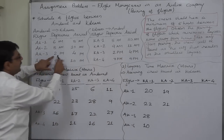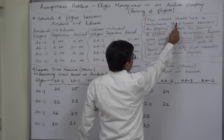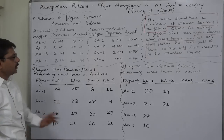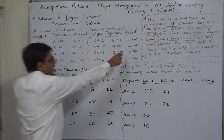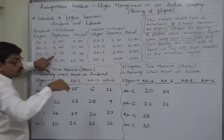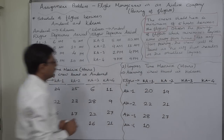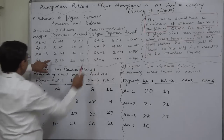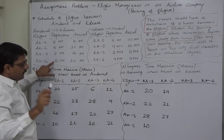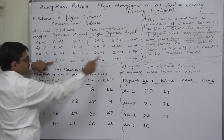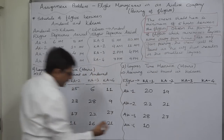If KA2 becomes AK3, the layover from 11 a.m. today to 2 p.m. today is only 3 hours — the minimum 5-hour condition is not satisfied. So it cannot become AK3 today; it can become AK3 at 2 p.m. tomorrow, giving 3 plus 24 hours — a layover time of 27 hours. If KA2 becomes AK4, from 11 a.m. today to 8 p.m. today the layover is 9 hours, which is more than 5, so the condition is satisfied.